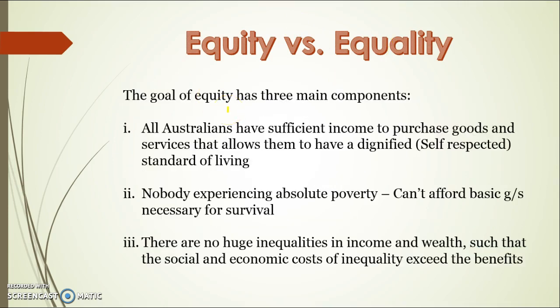The goal of equity has three main components. First, an equitable distribution of income occurs when all Australians have sufficient income to purchase goods and services that allows them to have a dignified standard of living — they can afford food and clothes without having to beg. Second, nobody is living in absolute poverty, meaning nobody can't afford the basic goods and services necessary for survival. Third, there are no huge inequalities in income and wealth such that the social and economic costs exceed the benefits.